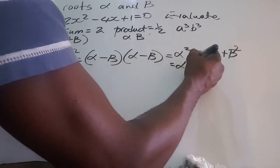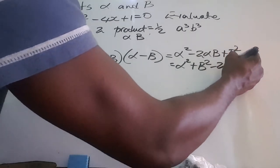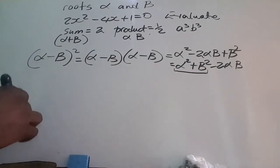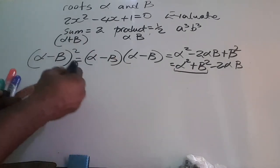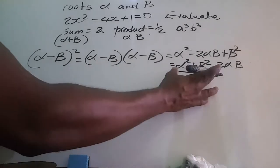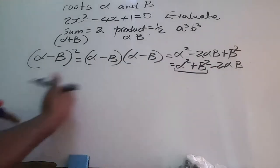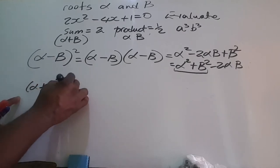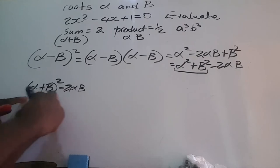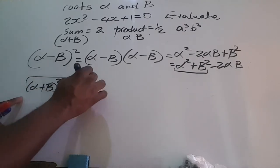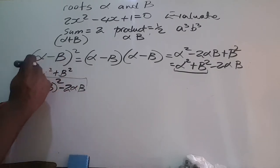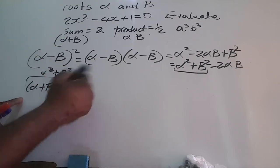We can rearrange this to alpha squared plus beta squared minus 2 alpha beta. This part is the sum of squares, which we did in a previous video. The sum of squares equals alpha plus beta squared minus 2 alpha beta.